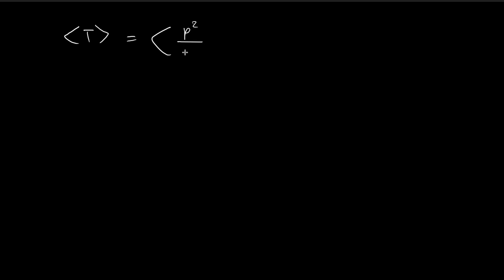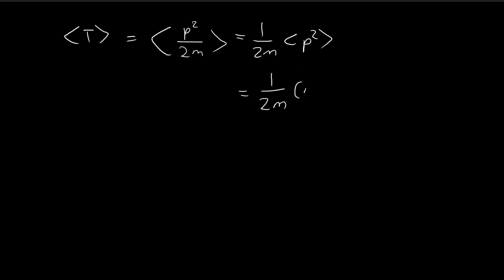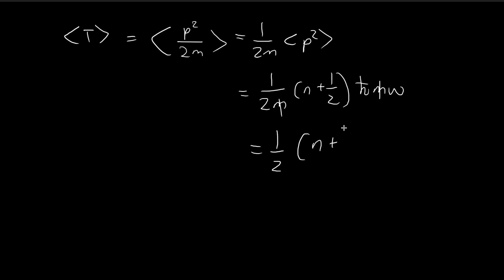Kinetic energy is equal to momentum squared divided by 2m. Because 2m is a constant we can just pull this out, so we have this constant times the expected value of p squared. From the last video, the expected value of p squared is equal to n plus one-half times h-bar m omega. Canceling terms, this is equal to one-half times n plus one-half times h-bar omega.